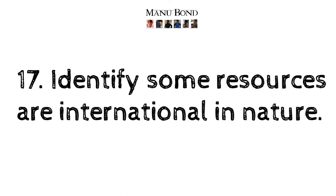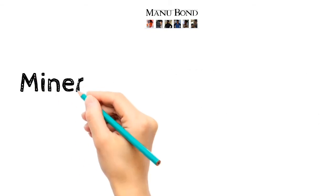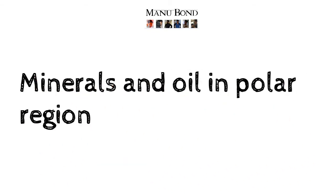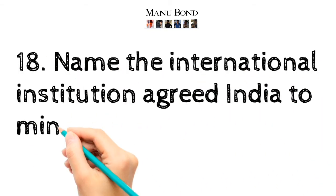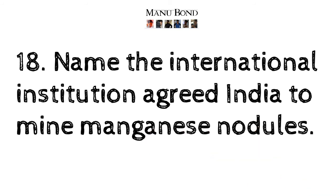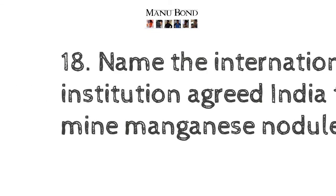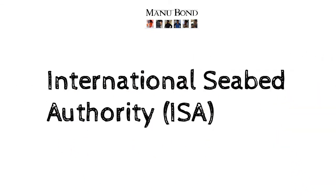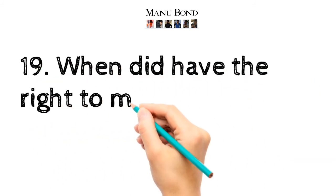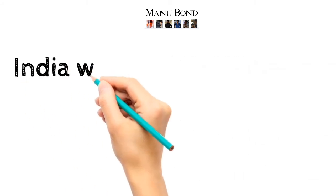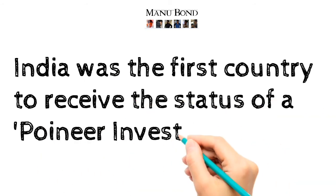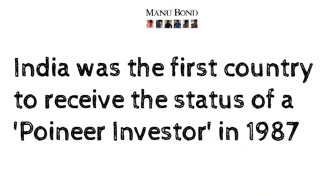Question number 17: Identify some resources that are international in nature. Answer: Minerals and oils in the polar region. Question number 18: Name the international institution that agreed to let India mine manganese nodules. Answer: International Seabed Authority (ISA). Question number 19: When did India get the right to mine manganese nodules? Answer: India was the first country to receive the status of pioneer investor in 1987.